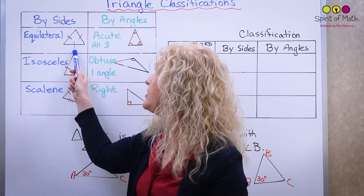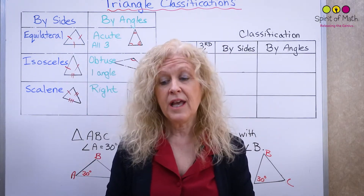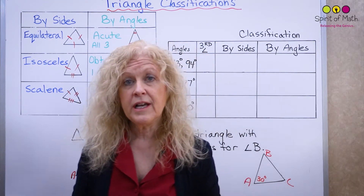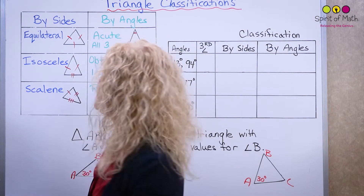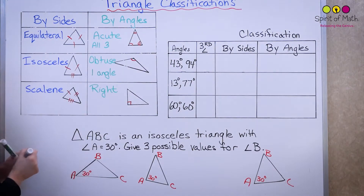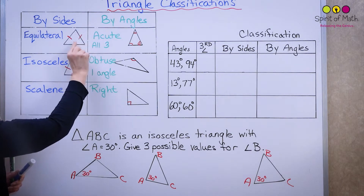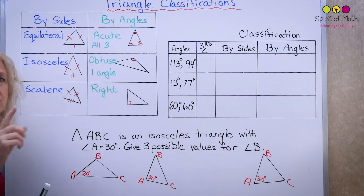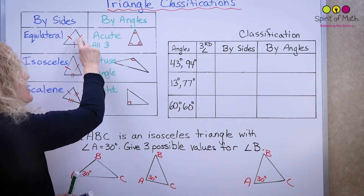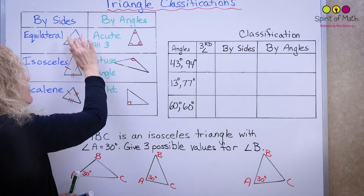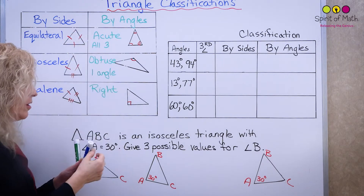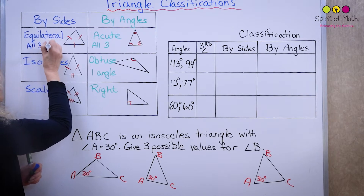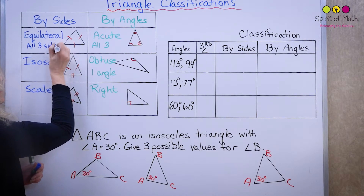The first type is that all the sides are equal in length. When they're all equal in length, that's called an equilateral triangle. I put a little tick in each side to indicate equal sizes — one tick in each means each length is equal to the others, so all three sides are equal.